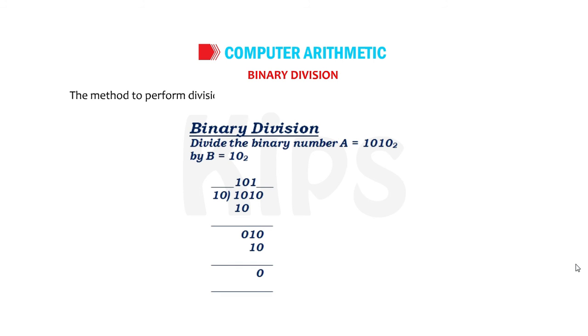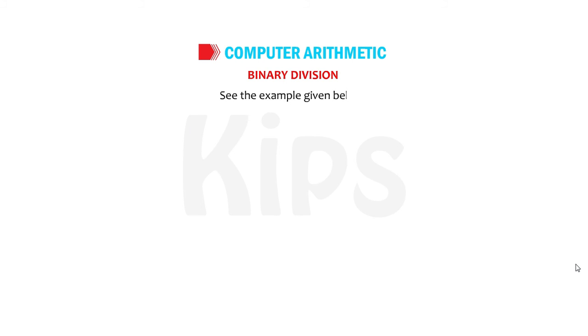Okay, now let us find out how binary numbers are divided. The method to perform division of two binary numbers is the same as that of decimal numbers. See the example given below.